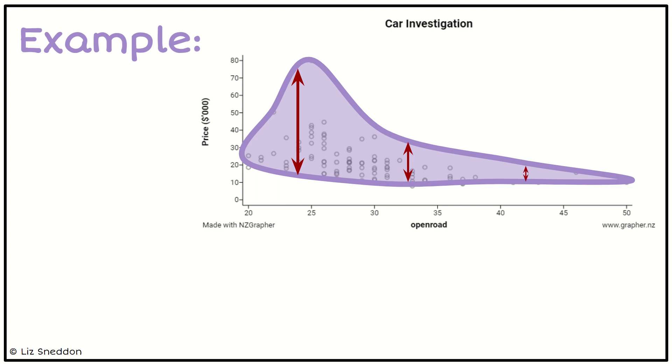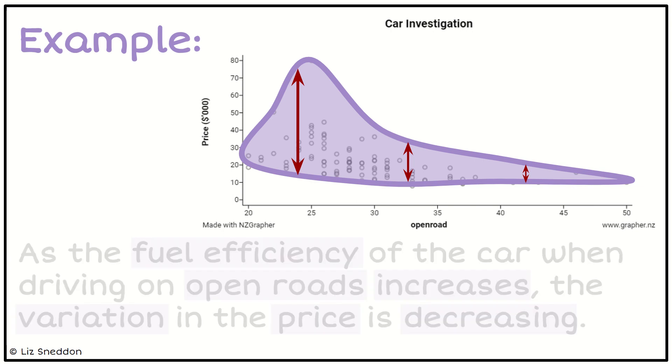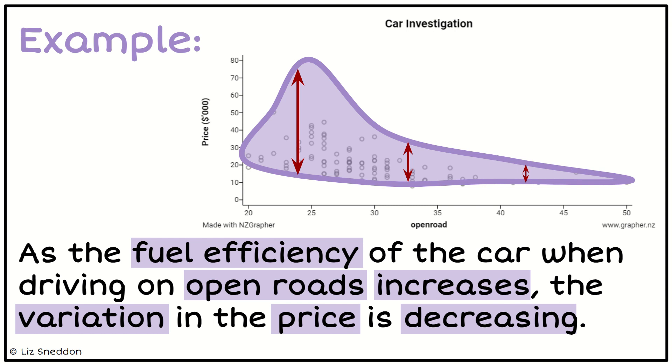Then for high fuel efficiencies there's a lot less variation in the price. This is a funnel effect, or the variation in price decreasing. So as fuel efficiency of the car on open roads increases, the variation in the price is decreasing.